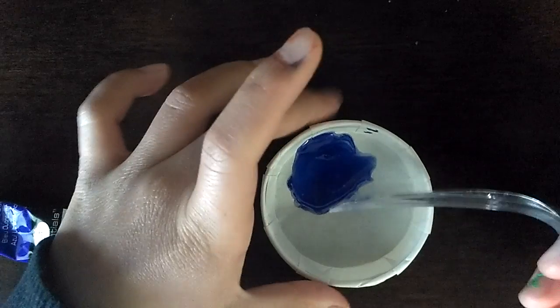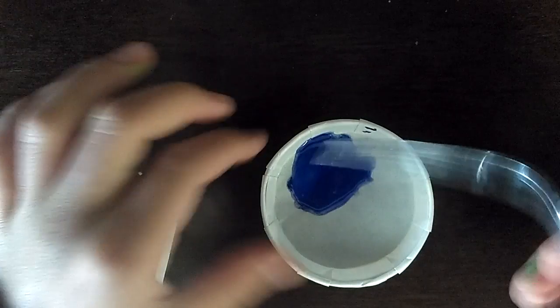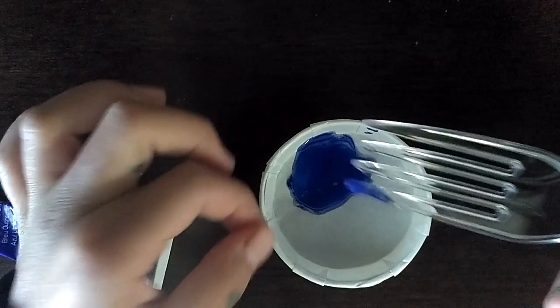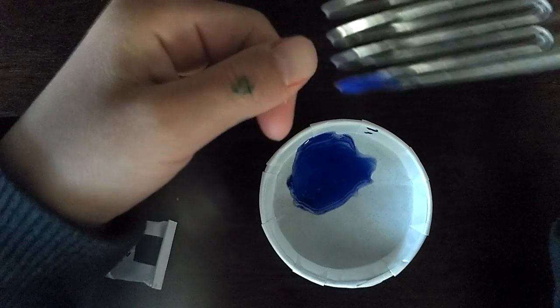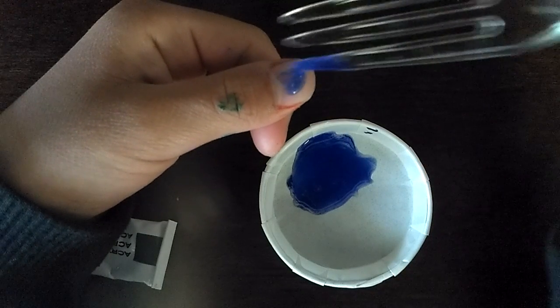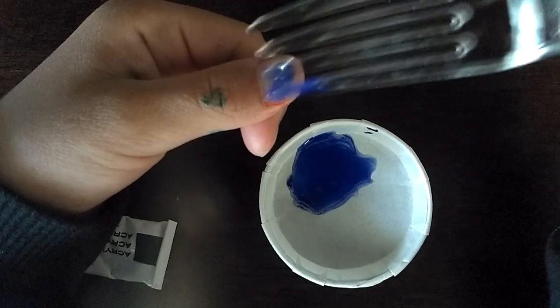So here's the color I'm gonna be applying. That's it. Now all you need to do is use something to apply it. As you can see, I'm using a fork.